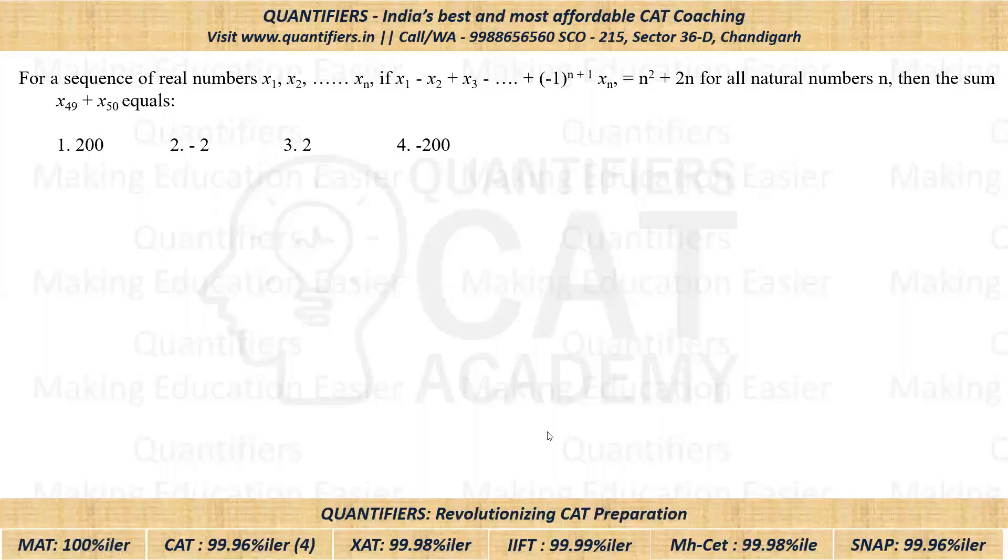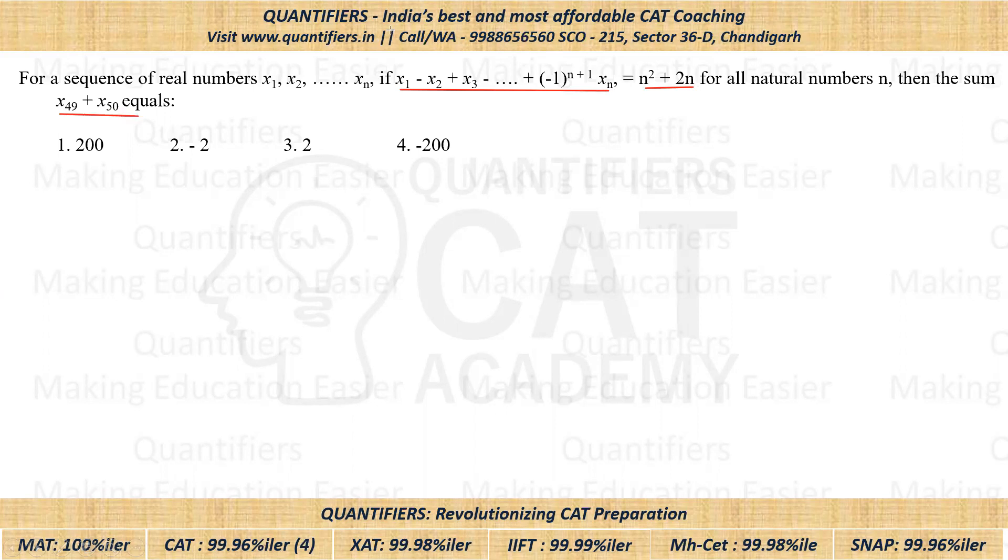Now let us come to the question. Now students, this question was not very difficult, but definitely it was very calculated. So the given expression is that x₁ minus x₂ and so on till xₙ. This is equal to n² plus 2 times n and we have to find x₄₉ plus x₅₀.